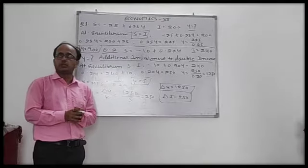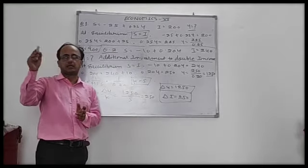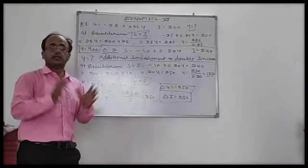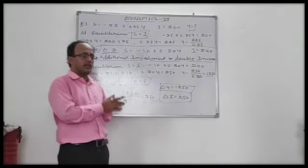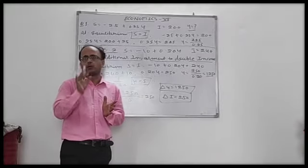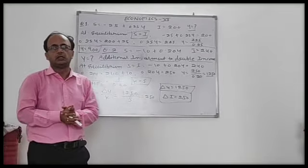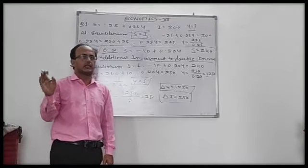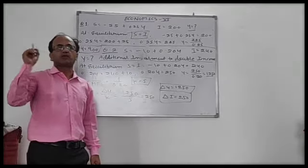What is the saving function? It is minus C-bar plus 1 minus b, multiplied by Y. This is the saving function. In the condition of equilibrium, as we know, aggregate demand equals aggregate supply, so investment is equal to saving.